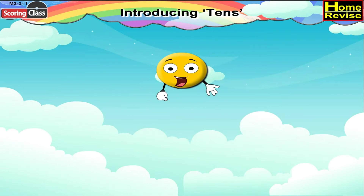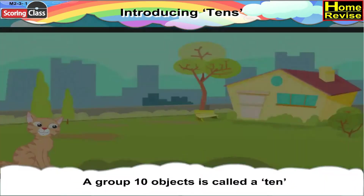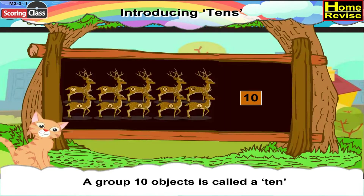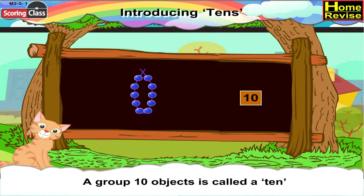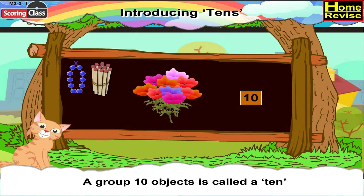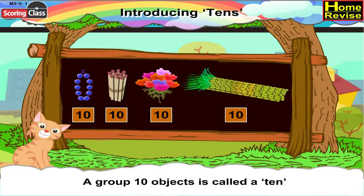Introducing Tens. Children, a group of ten objects is called a ten. Here you'll see a ten of beads. This is a ten of matchsticks. That is a ten of flowers. That is a ten of sugarcane.